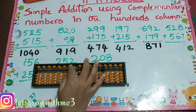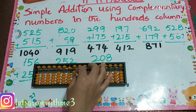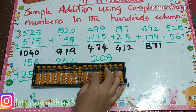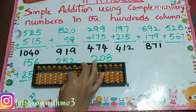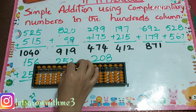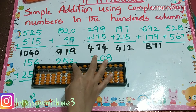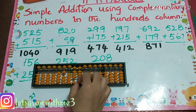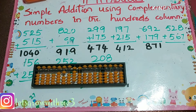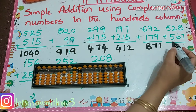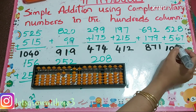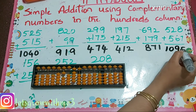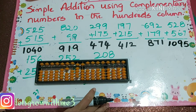Next one: 528 plus 567. Your answer is 1095.